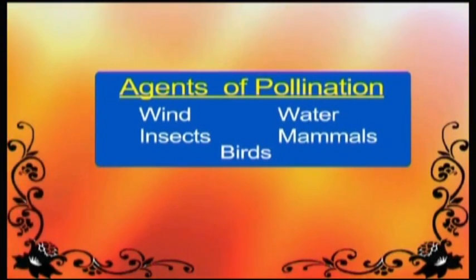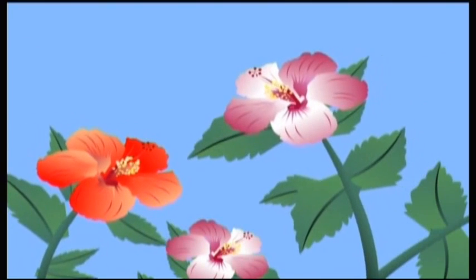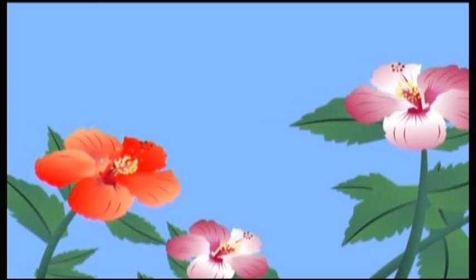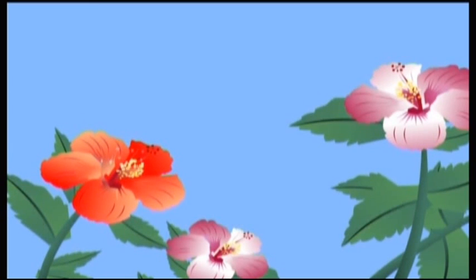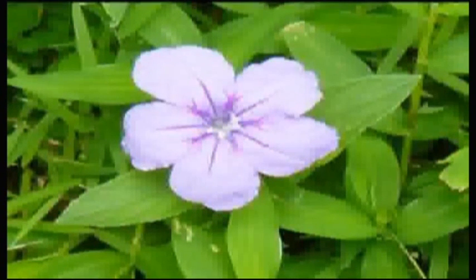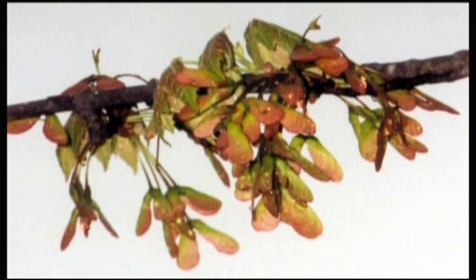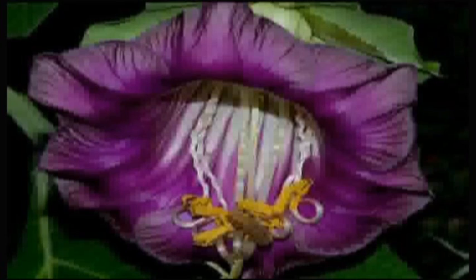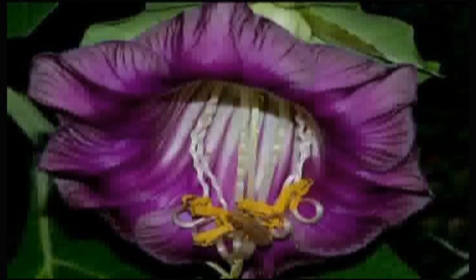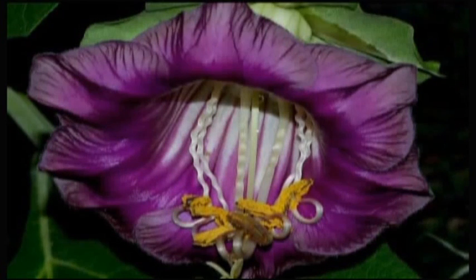Wind blows away pollen grains from the anthers of one flower to the stigma of another flower. Such flowers are small, not brightly colored, and do not produce nectar. They have very light pollen grains so that they can easily be blown away with the wind. Anthers are large and loosely attached, and stigmas hang out of the flower to trap the pollen grains.